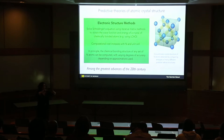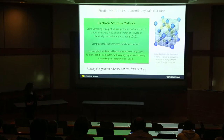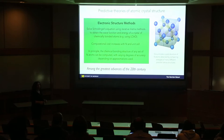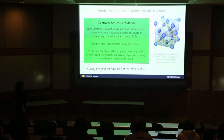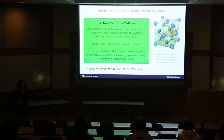You write the wave function of the whole crystal in terms of linear superpositions of the orbitals used to describe electron clouds, then solve iteratively. You try different crystal lattices and find the one with the lowest energy — that's the thermodynamically preferred one. These computations can be very costly; computational cost increases with the number of atoms and the unit cell size. In principle, the chemical bonding structure of any set of N atoms can be computed with varying degrees of accuracy.